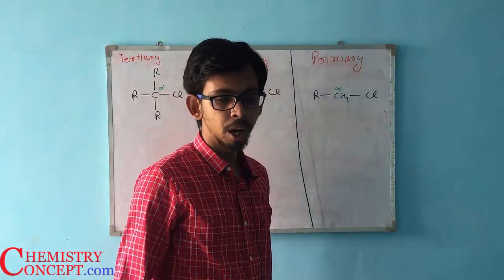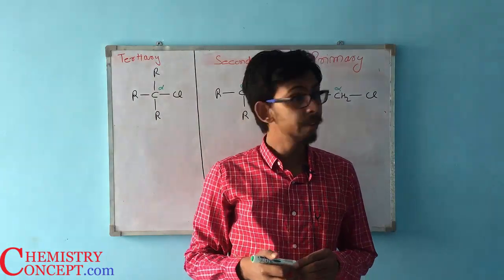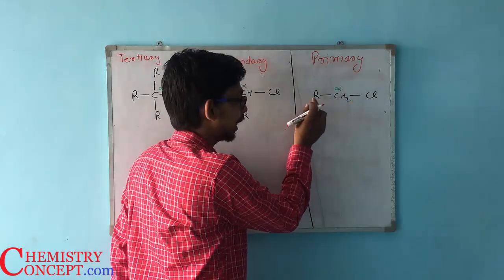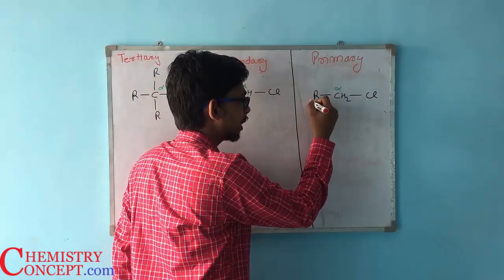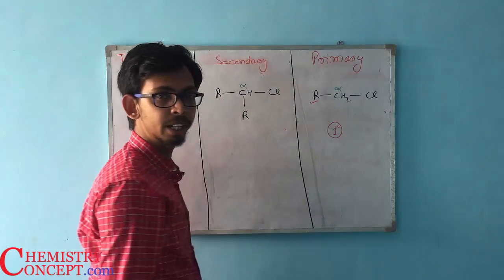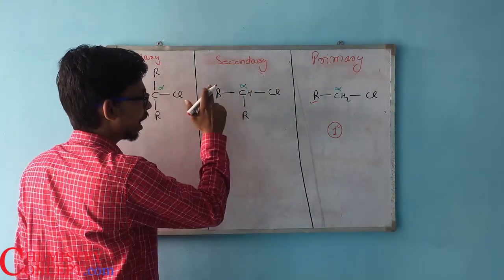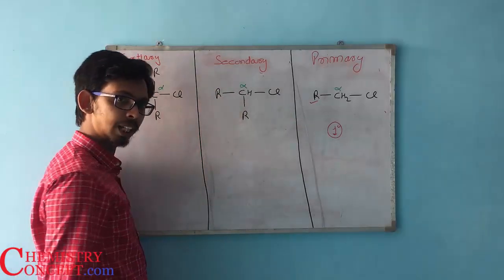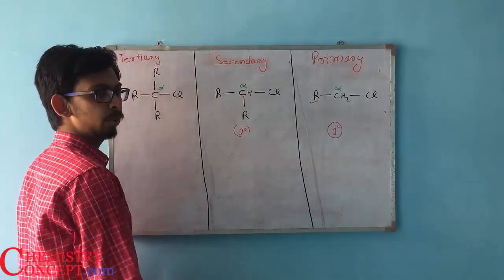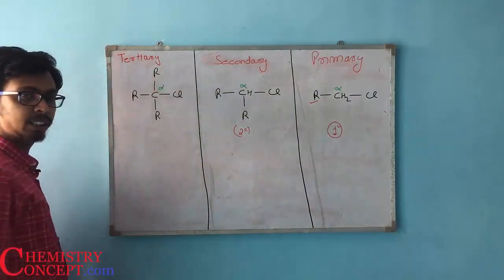Now primary, secondary, and tertiary depends upon how many carbon chains the alpha carbon is further attached to. If you have a look at the first one, the alpha carbon is attached to only one carbon chain—that's why it is primary, one degree. In the second one, the alpha carbon is attached to two carbon chains. R stands for a carbon chain. Two carbon chains, so it's secondary or two degree. Now in this one, the alpha carbon is attached to three different carbon chains, and that's why the compound is called tertiary.